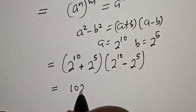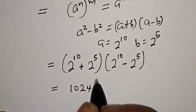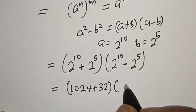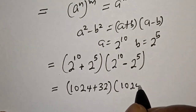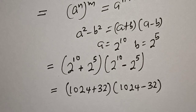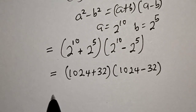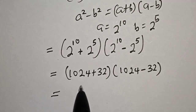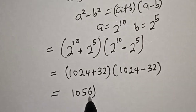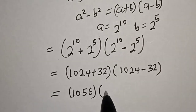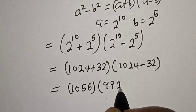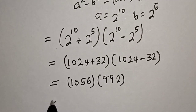2 raised to power 10 is 1024, and 2 raised to power 5 is 32. So this becomes 1024 plus 32, multiplied by 1024 minus 32. That gives us 1056 multiplied by 992.